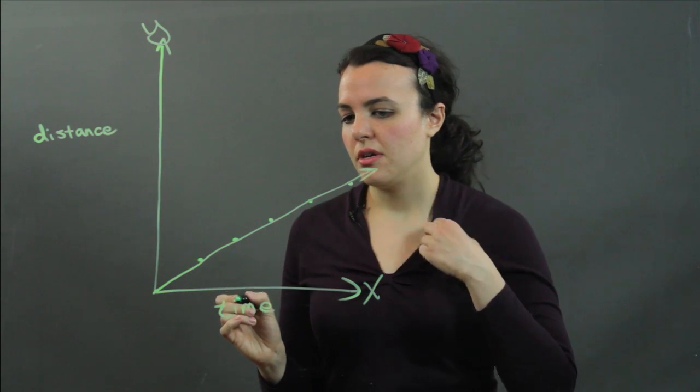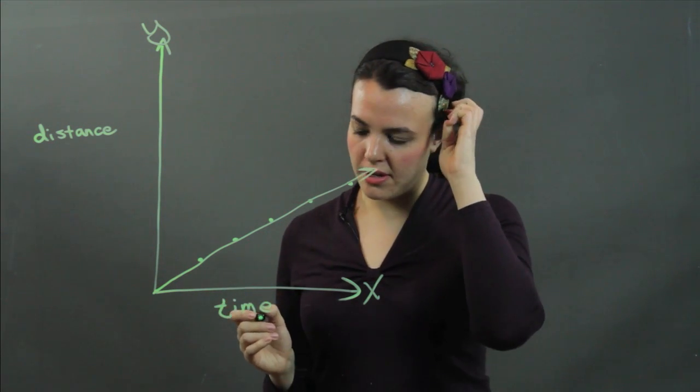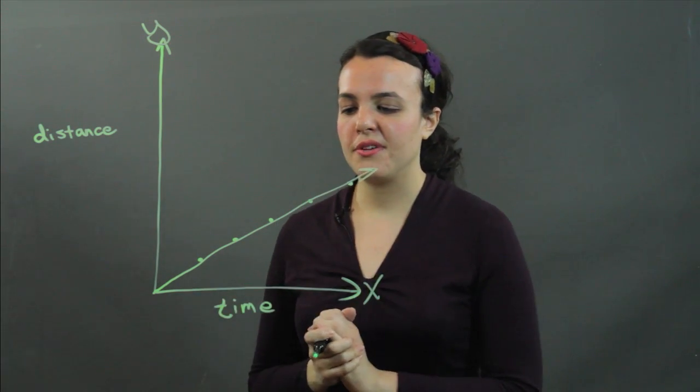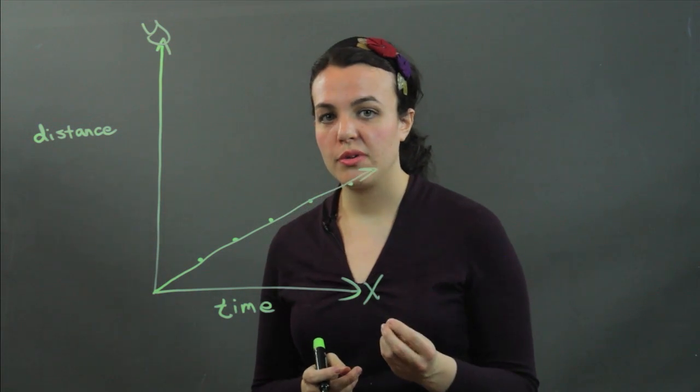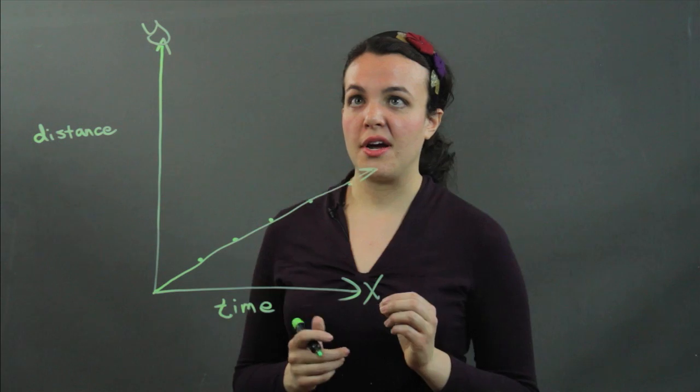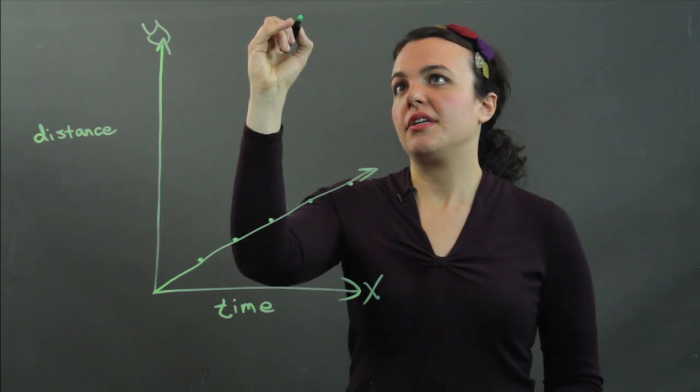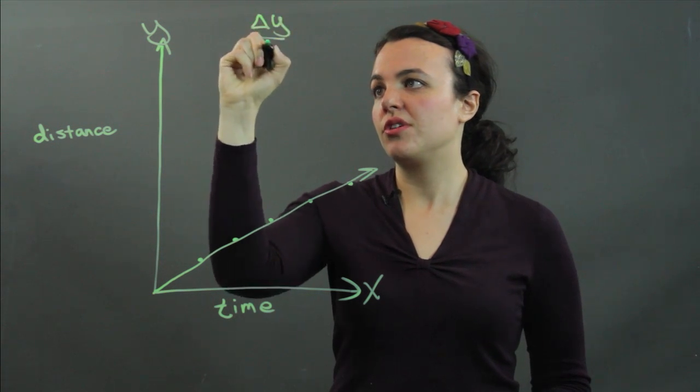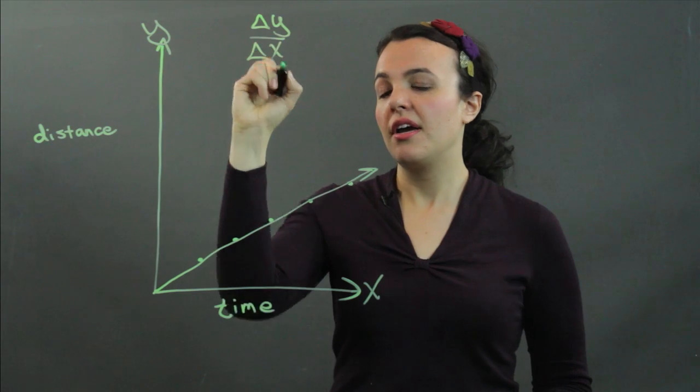What's fun about this is you remember that in, or maybe you don't, in lines, in graphing lines, we often have to find the slope. The slope of a line is found by calculating the change in y over your change in x.